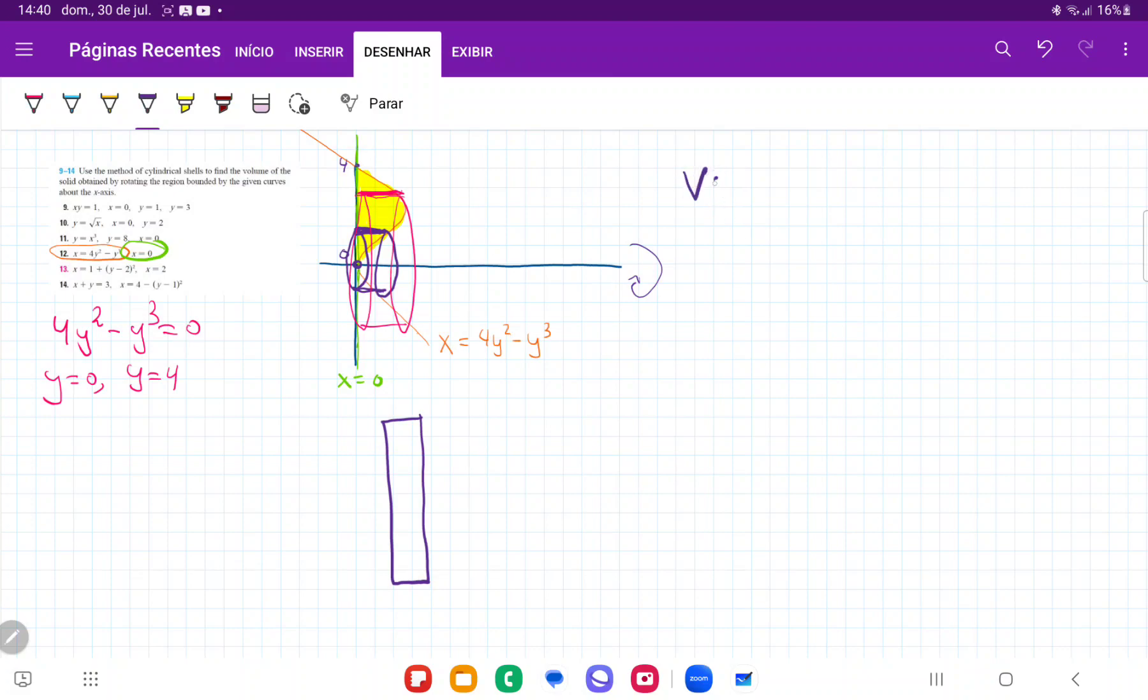So the volume is going to be the sum, because the integral is the sum from 0 all the way out to 4, where it touches here, of A(y) dy.